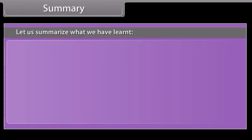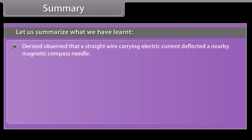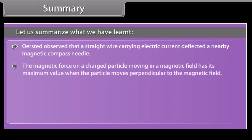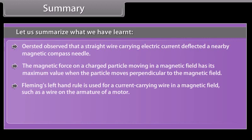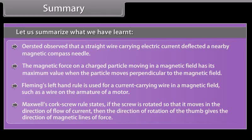Summary. The magnetic force on a charged particle moving in a magnetic field has its maximum value when the particle moves perpendicular to the magnetic field. Fleming's left-hand rule is used for a current carrying wire in a magnetic field, such as a wire on the armature of a motor. Maxwell's corkscrew rule states: if a screw is rotated so that it moves in the direction of flow of current, then the direction of rotation of the thumb gives the direction of magnetic lines of force.